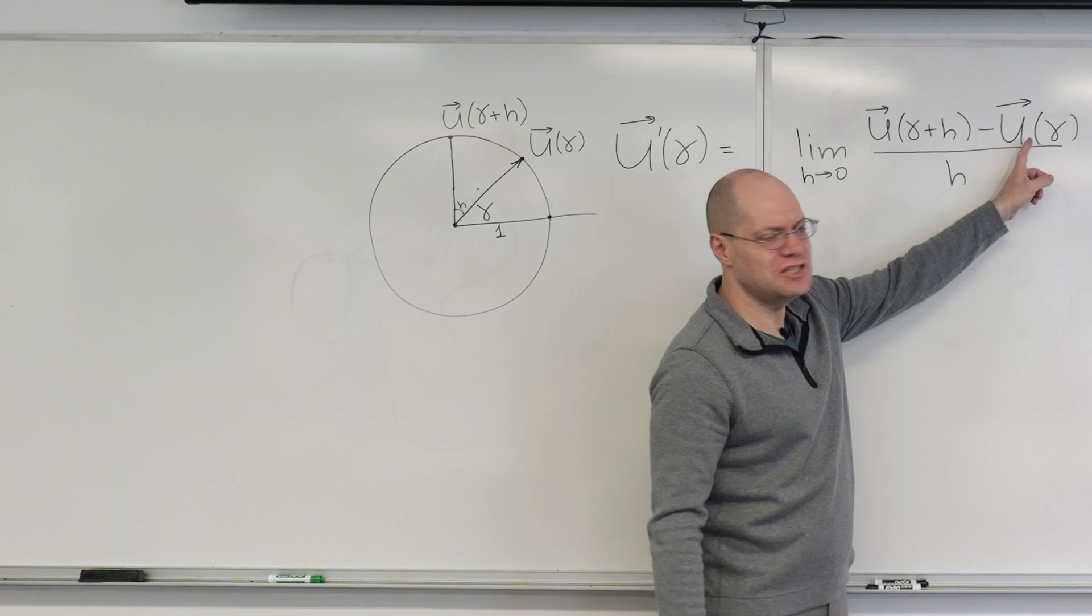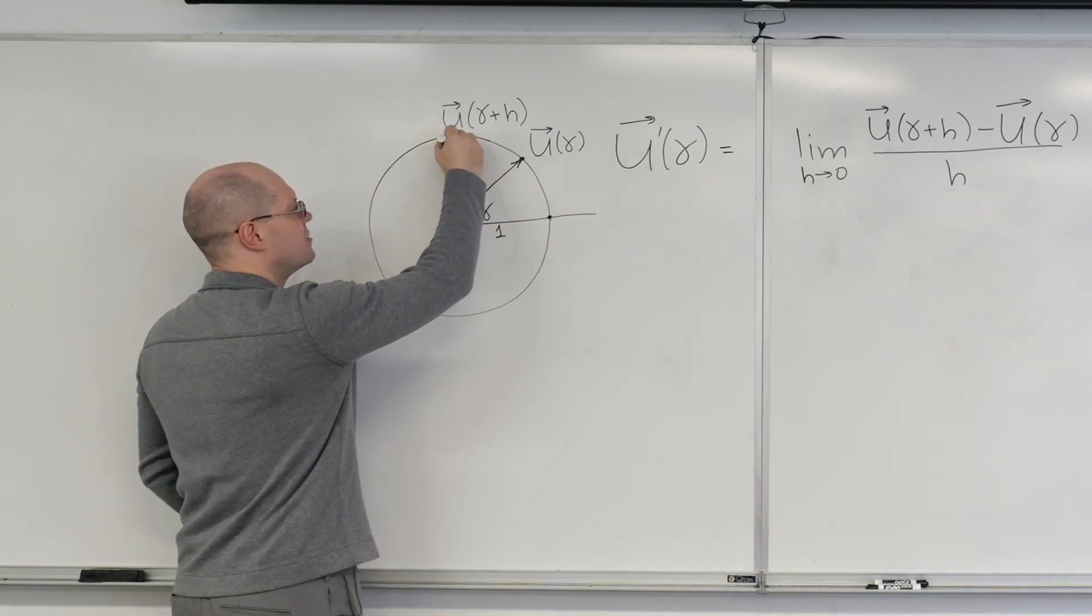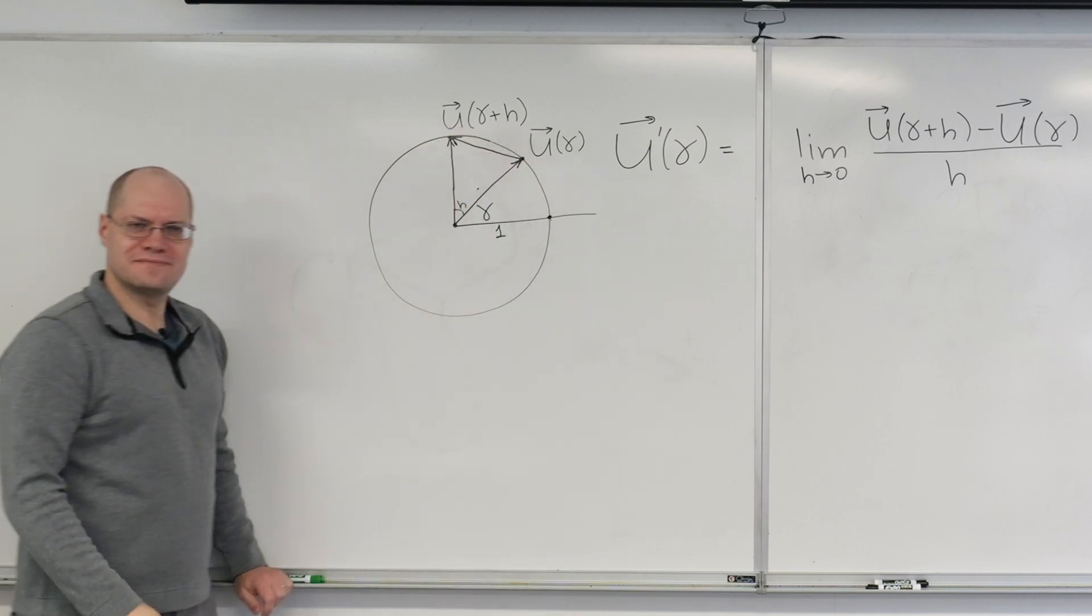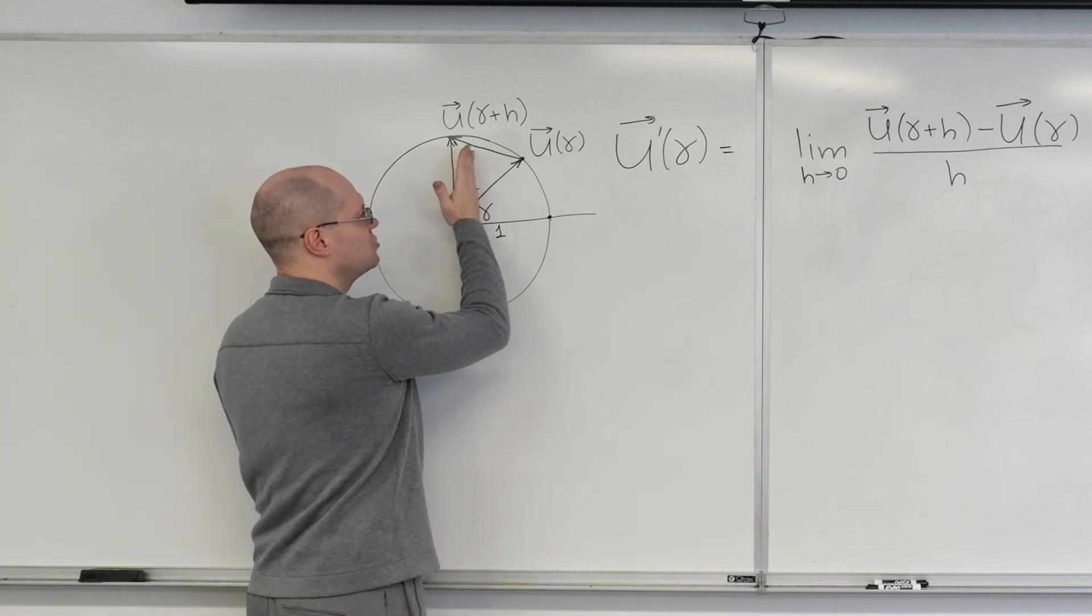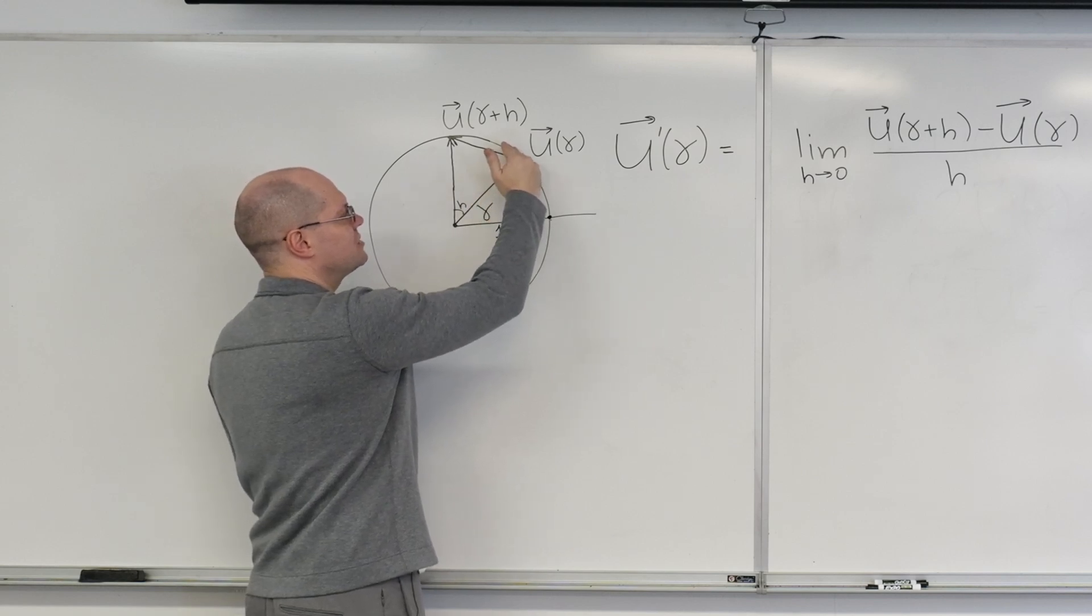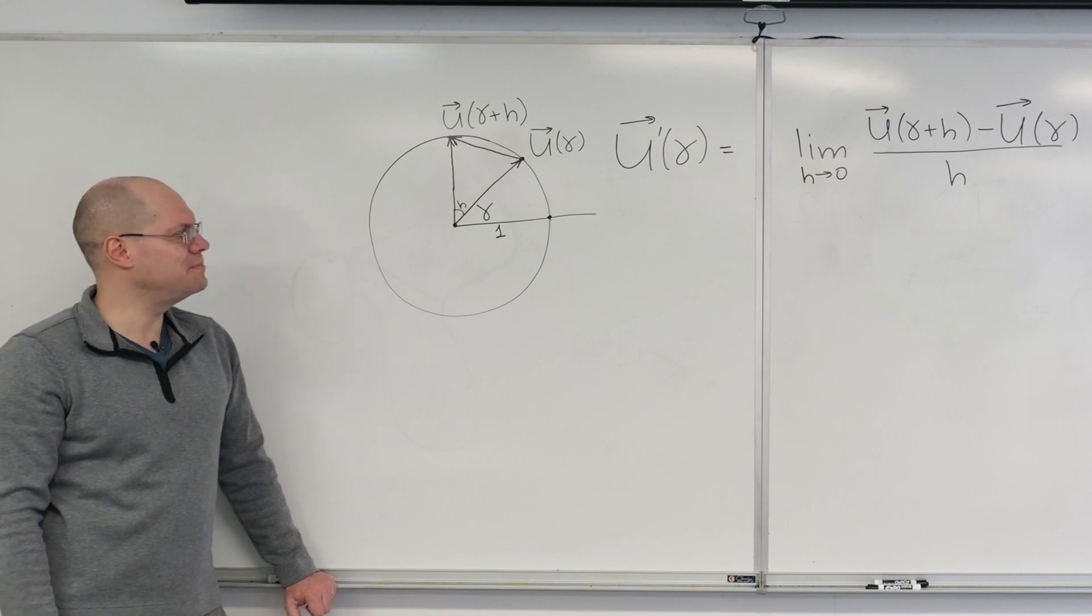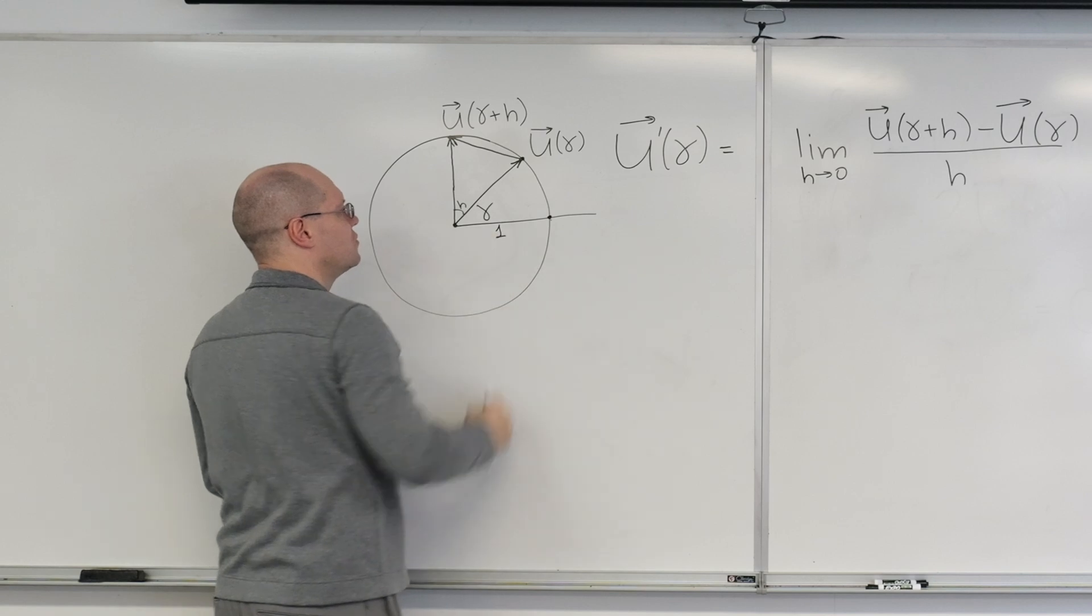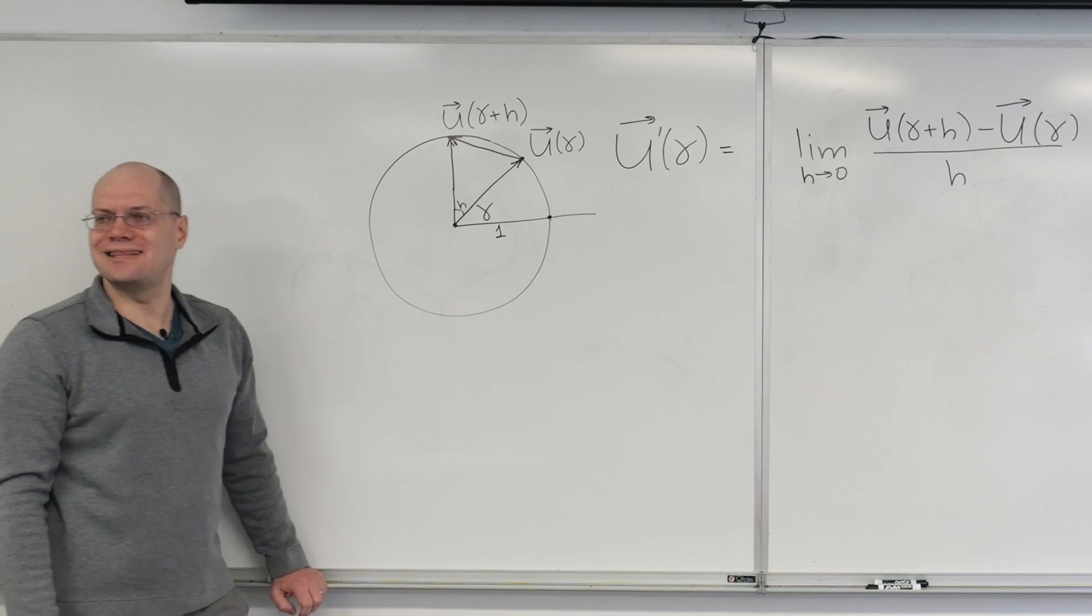Now I have to do U of gamma plus H minus U of gamma. Well, here it is. This is, it's this vector that points this way. And we know, we discussed this, that in the limit, as H goes to zero, you can begin visualizing it. It'll end up being a vector that's tangential to the curve. That's what it'll end up being. So we know that it will end up being a vector that looks like this. So the only question is its length.